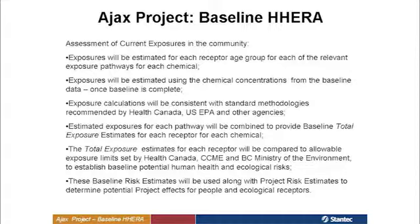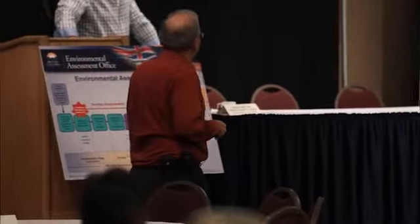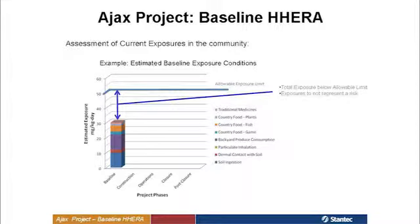Those total exposure estimates will be compared to the allowable exposure limits set by Health Canada — the benchmarks we have to use that the government says, as long as your exposures are below those, the government is not concerned about the exposure. The baseline is going to be used in comparison. From the baseline, there's a graph that looks at soil ingestion, dermal contact, backyard garden produce, game, and traditional medicines — all of these components stacked up to give a total exposure — compared to the allowable exposure limit to see whether you're above or below.